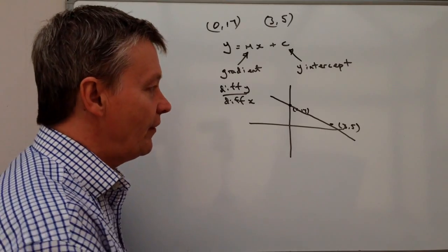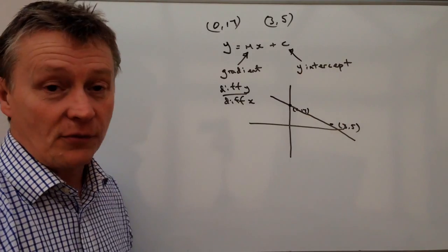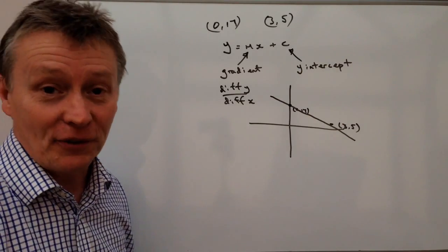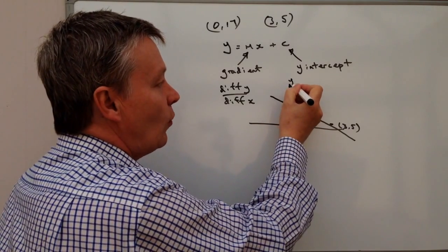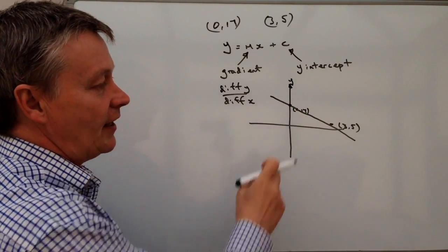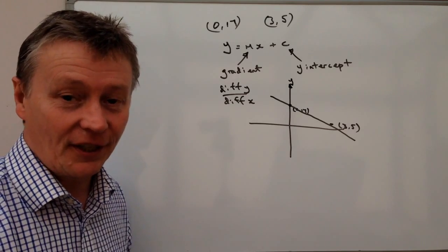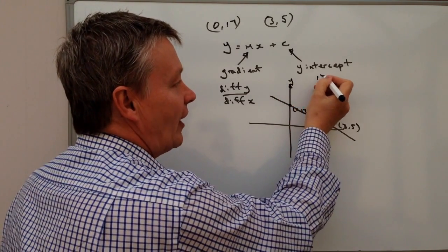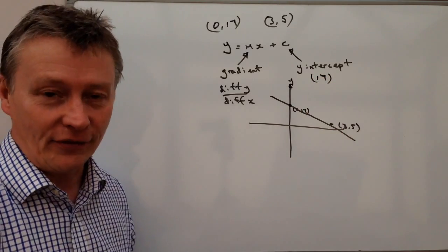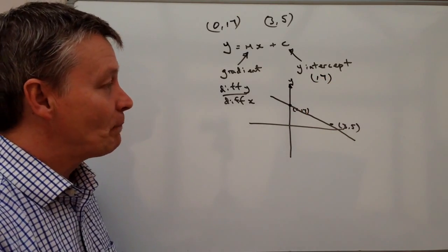Let's have a look at this bit first, which is the y-intercept, which is the easy bit. It's going to be 17 because we need to know where it crosses the y-axis, and it's 17 in this particular case because the information tells us. So that's great, we can work that out, and that's 17.